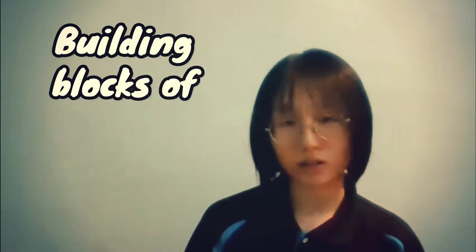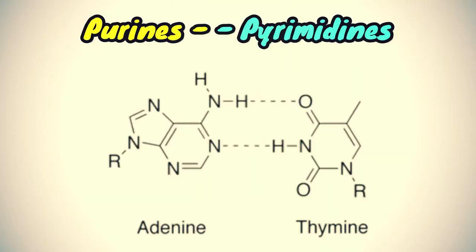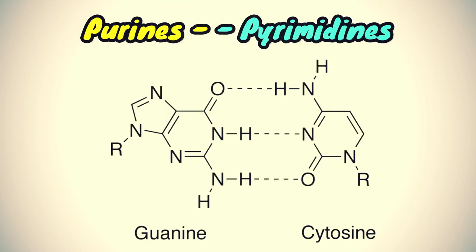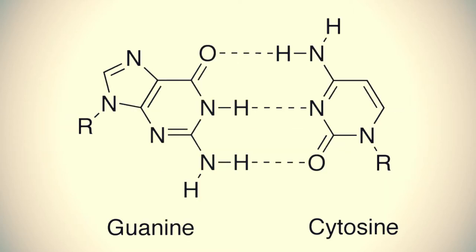Purines and pyrimidines make up the two groups of nitrogenous bases, which are the components of nucleotides — the building blocks of nucleic acids DNA and RNA. In DNA, purine adenine pairs with pyrimidine thymine via two hydrogen bonds, while purine guanine pairs with pyrimidine cytosine via three hydrogen bonds. In RNA, pyrimidine uracil replaces thymine and pairs with adenine via two hydrogen bonds, while guanine still pairs with cytosine via three hydrogen bonds.